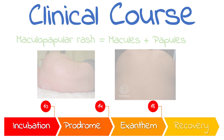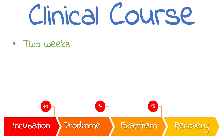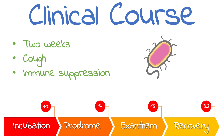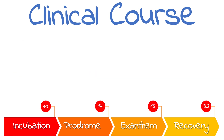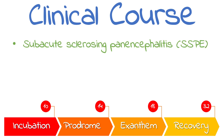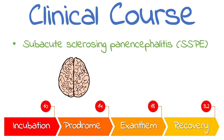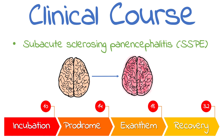The fading rash heralds the start of the recovery phase, which usually only lasts for two weeks, with the cough being the only persisting symptom. However, measles also causes immune suppression, which results in secondary bacterial infections like acute otitis media and pneumonia. One rare complication is subacute sclerosing panencephalitis, or SSPE, which occurs 10 years after first exposure and is potentially the result of an insidious persisting infection. It causes chronic progressive brain inflammation, characterized by slowly progressive neurologic impairment starting with abnormal behaviours, evolving into dementia, and can cause death.